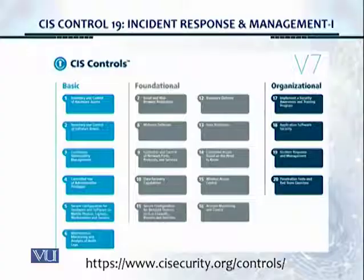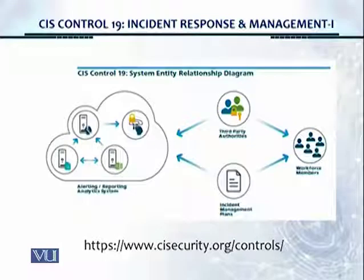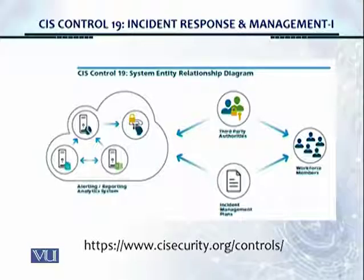This is the CIS Controls version 7 layout. Right now, in the second last control, Control number 19, incident response and management, which is for the organization as a whole. This is the system entity relationship diagram. There are third-party authorities and incident management plans, which we're going to work with the workforce members and educate them and implement our incident response and management plan.